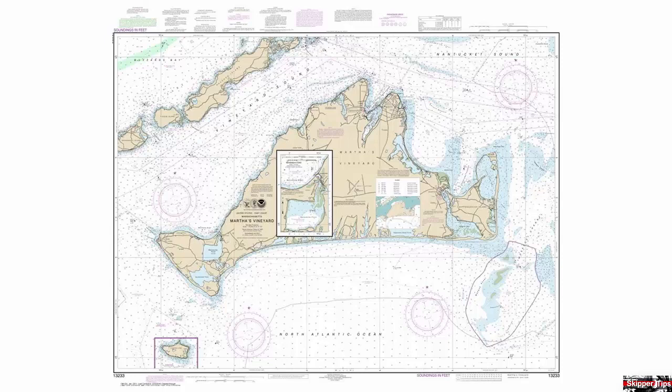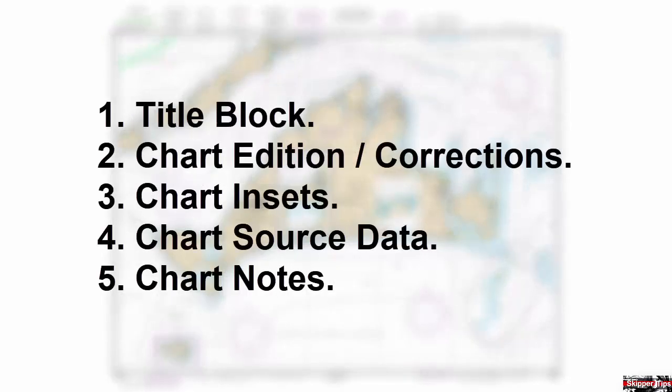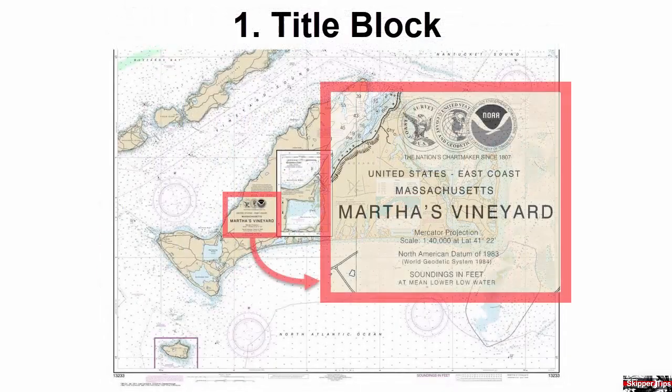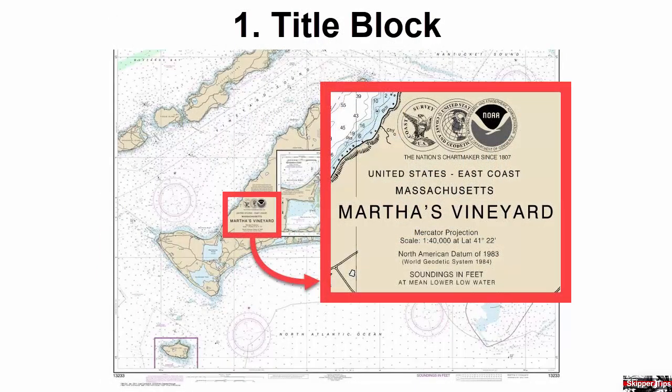On this chart of Martha's Vineyard, we'll look at five vital chart parts: the title block, the chart addition and correction information, chart insets, chart source data, and chart notes.